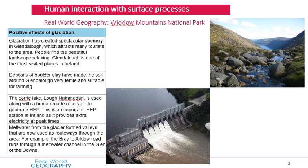The first positive effect of glaciation in Wicklow: glaciation has created spectacular scenery in Glendalough. Looking at the picture on the right, that lovely valley shape was created by glaciation. This is a positive effect because it makes Glendalough a great tourist attraction - it's a fantastic place to walk around with really nice landscape and loads of wildlife, and it's one of the most visited places in Ireland. Tourists spend money in local shops, restaurants, and cafes.